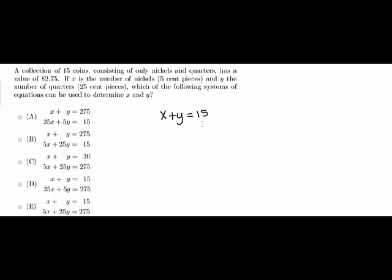Now moving on to the second piece of information. It tells us the number of nickels and quarters have a total value of $2.75. So I would write 0.05x plus 0.25y equals 2.75.